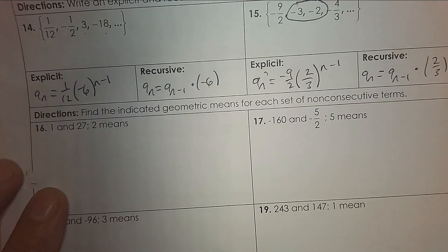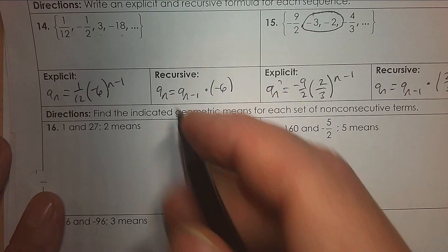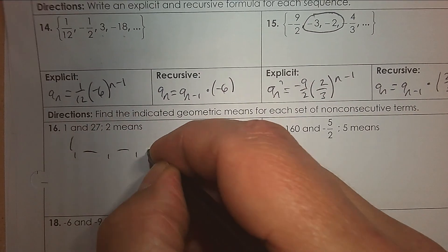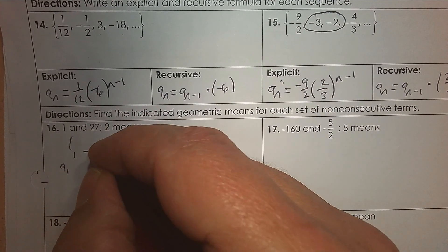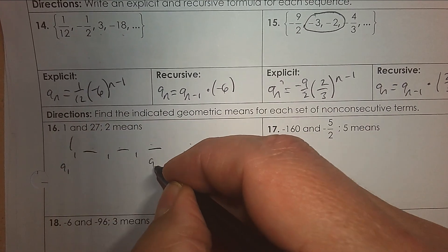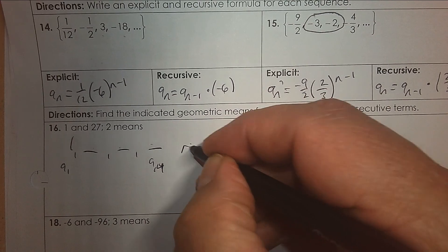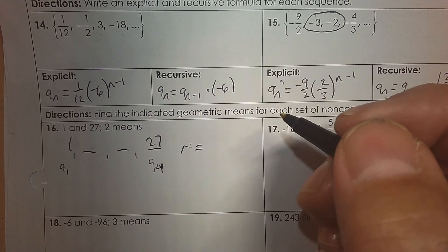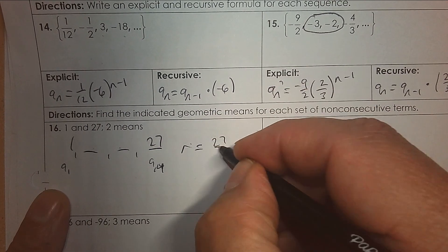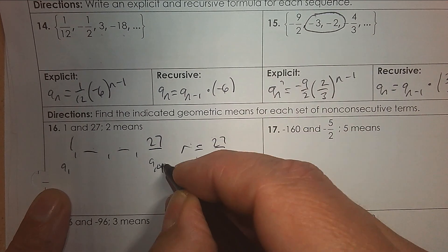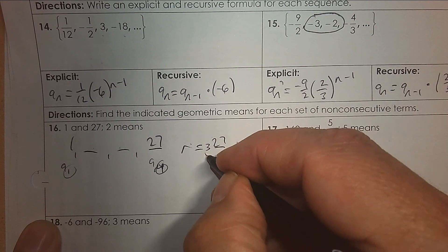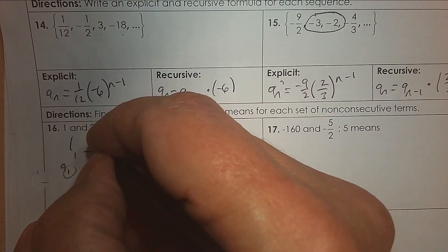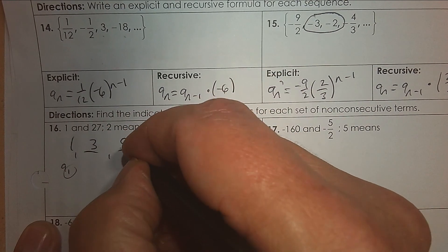Number 16: find the two means between the given terms. You have the first term and the fourth term. So we go 27 divided by 1, then 4 subtract 1 — it's the cube root of that, which is 3. So multiply by 3 and you get 3 and 9 as the two geometric means.